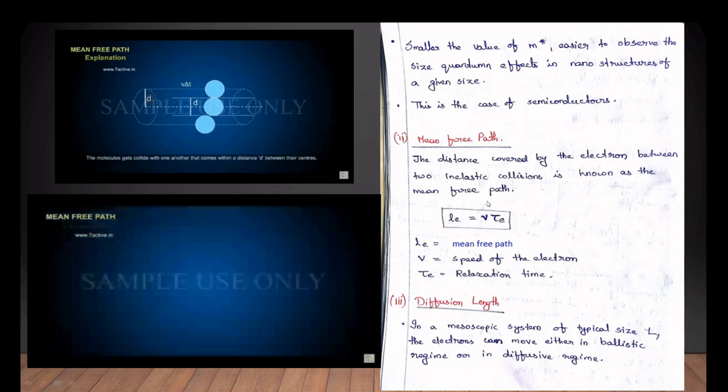Suppose we have a macroscopic object. The two objects are in an inelastic collision, and there are lots of objects in the place where they form their energy. An inelastic collision means that electrons convert to different forms of energy.